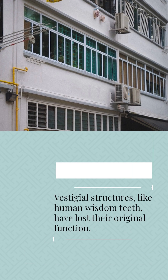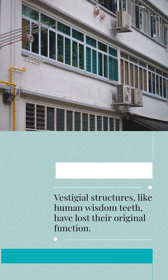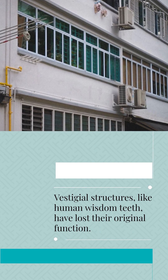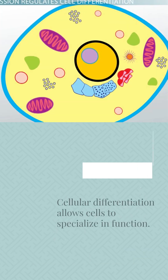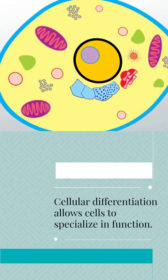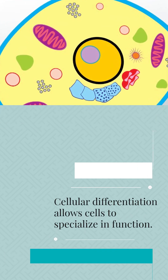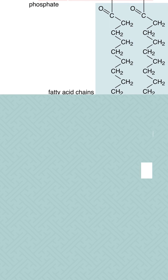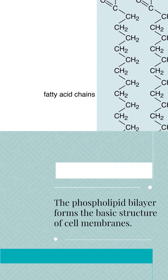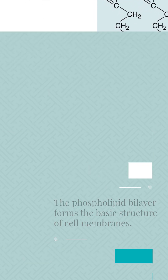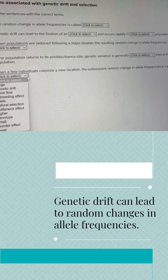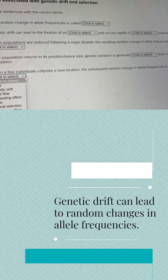Vestigial structures, like human wisdom teeth, have lost their original function. Cellular differentiation allows cells to specialize in function. The phospholipid bilayer forms the basic structure of cell membranes. Genetic drift can lead to random changes in allele frequencies.